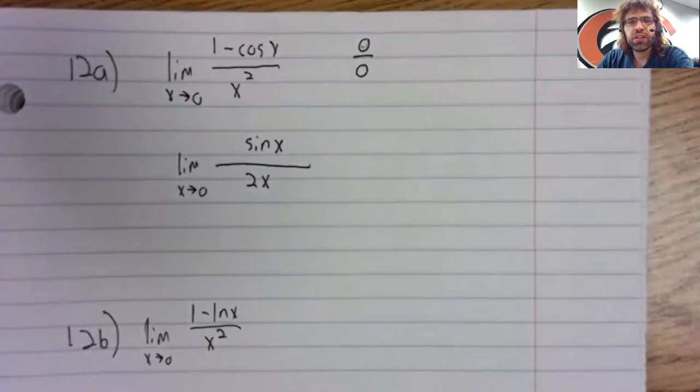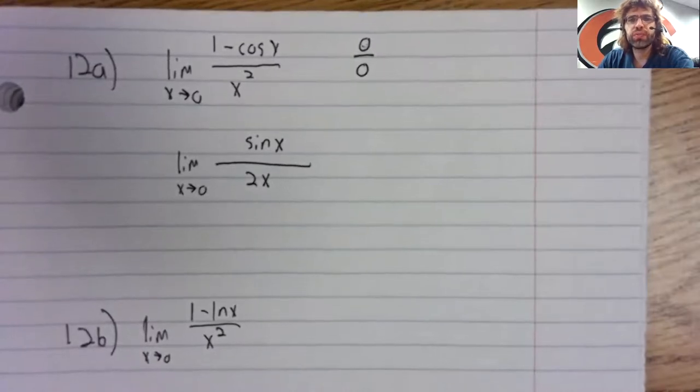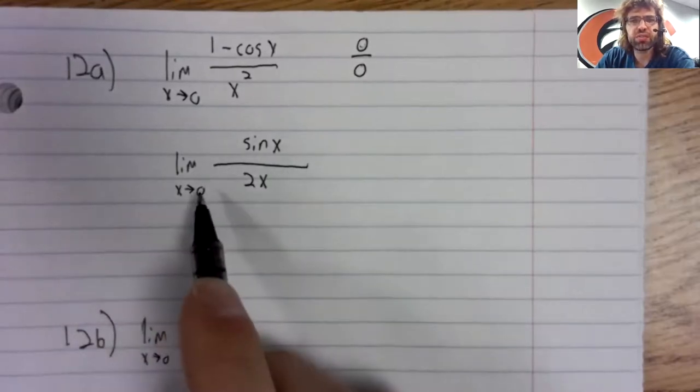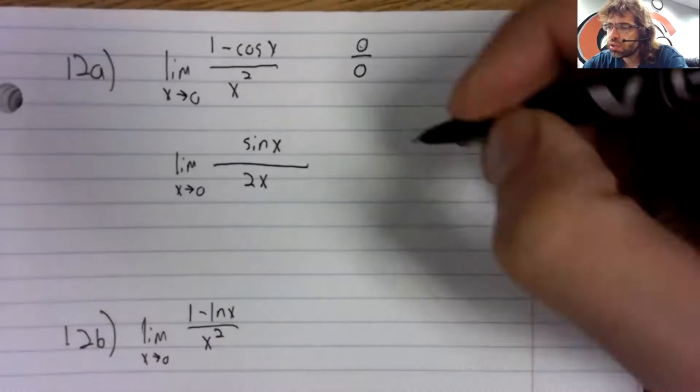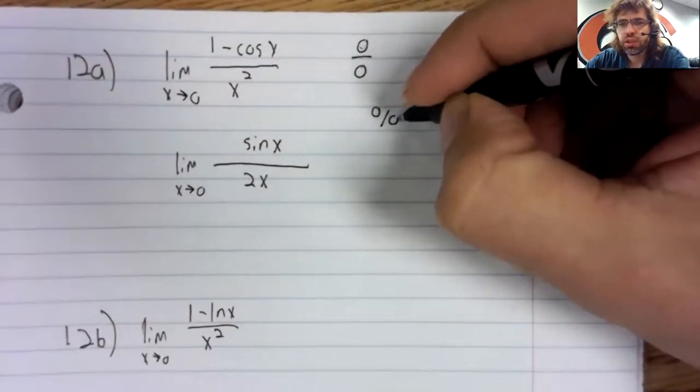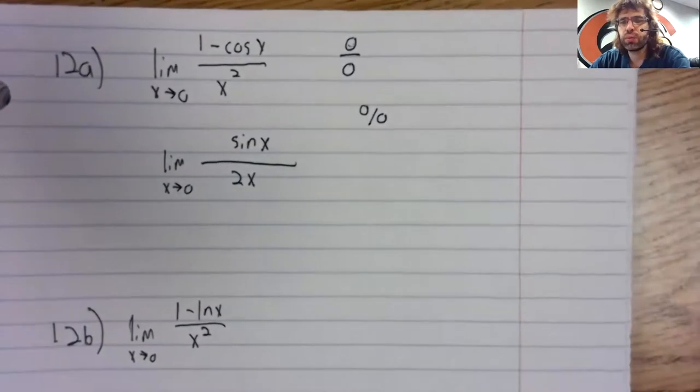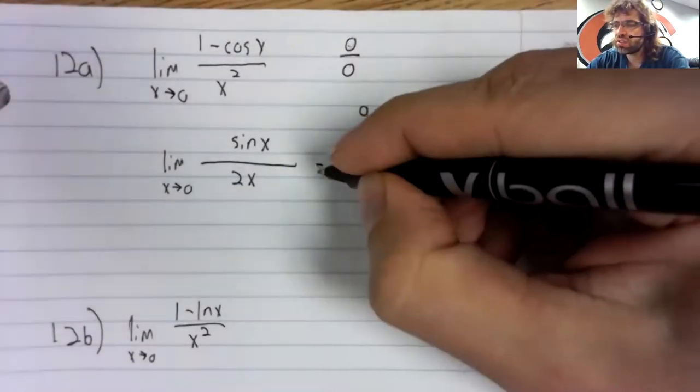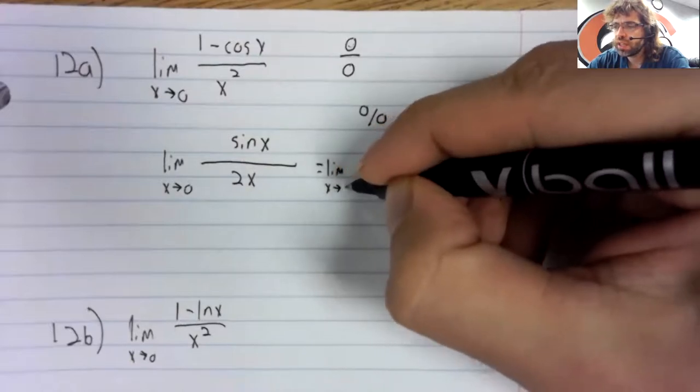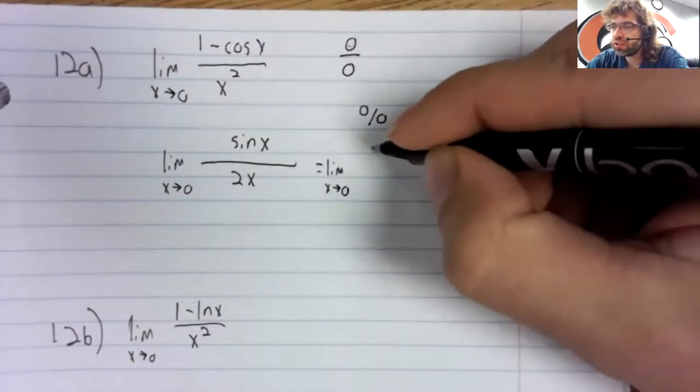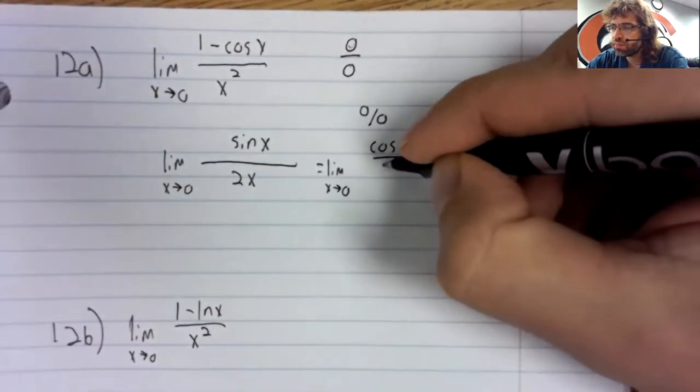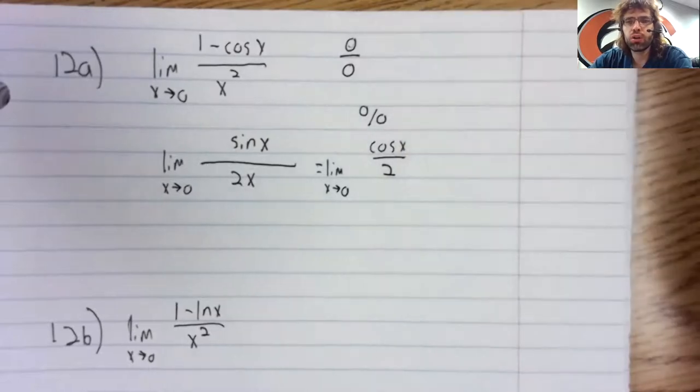Once again, these are continuous. To investigate the limit, we just let x be zero. Now the sine of zero is zero. Two times zero is zero. This is still an indeterminate form.